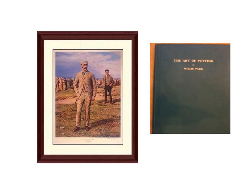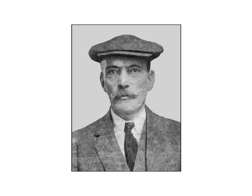He wrote the first book on golf by a golf professional, entitled The Game of Golf in 1896. The book outlines his design philosophy, which includes starting with some easy holes, having all hazards visible, and allowing for the ability to run a ball up to the green. He also wrote The Art of Putting in 1920, whose original hardcover edition runs from $600 to $1,500. Willie Park Jr. ran the family golf club making business and, with golf expanding, started an export business of golf equipment. He also designed a reported 170 golf courses.